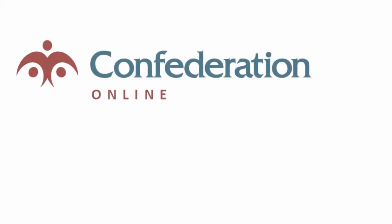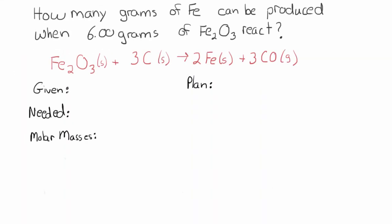Hello, bonjour. It's Laura here. In this video, I'm going to show you how to solve a typical stoichiometry problem. I've got a problem written here: how many grams of iron can be produced when 6 grams of iron 3 oxide react? We've got the formula Fe for the iron and Fe₂O₃ for the iron 3 oxide. We're also given the balanced equation: Fe₂O₃ plus 3 carbon will produce 2 moles of iron plus 3 of the carbon dioxide.